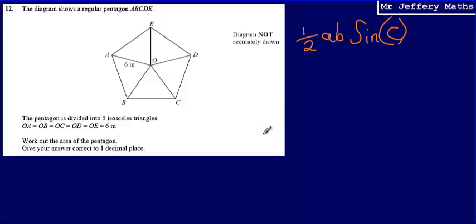I can use this formula because I know two lengths which are trapping an angle. I've got 6 meters here, and I know all of these are the same size, so that's 6 meters as well. So I've got two lengths, 6 and 6, which are trapping the angle AOB.